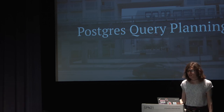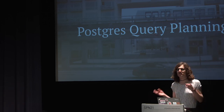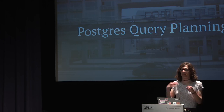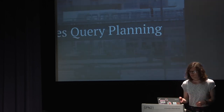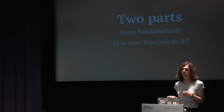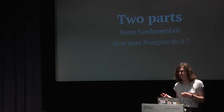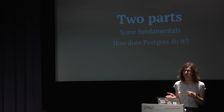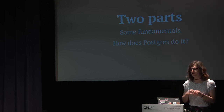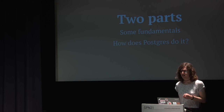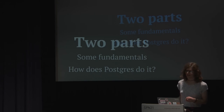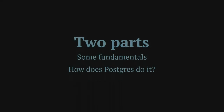Today we'll be talking about Postgres query planning — the process of going from SQL to something the database can actually execute. The talk comes in two parts: first we'll cover some fundamentals and theory, including relational algebra, which is the theoretical foundation relational databases use, and some basic ideas for query optimization. Then in the second part we'll look at how Postgres does it, actual Postgres query plans, how to read them, and how the planner works.